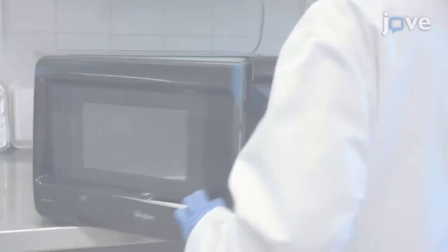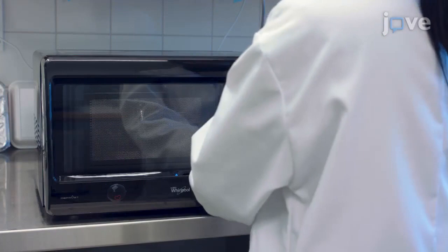For a 1% gel, dissolve 1 gram of agarose in 100 milliliters of TBE by heating the mixture in a microwave oven. Add 10 microliters of 10000X...